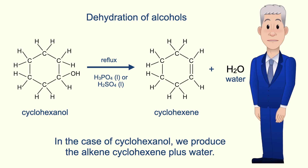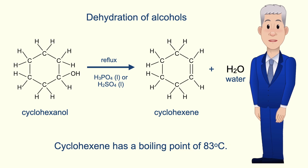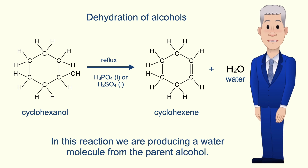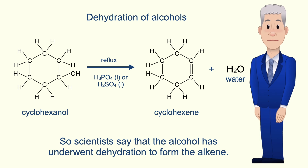In the case of cyclohexanol we produce the alkene cyclohexene plus water. Cyclohexene has a boiling point of 83 degrees Celsius, so at the end of the reaction we can purify the cyclohexene by distillation. In this reaction we're producing a water molecule from the parent alcohol, so scientists say that the alcohol has undergone dehydration to form the alkene.